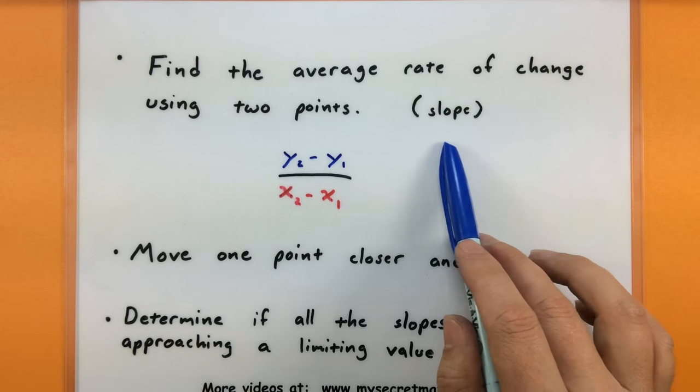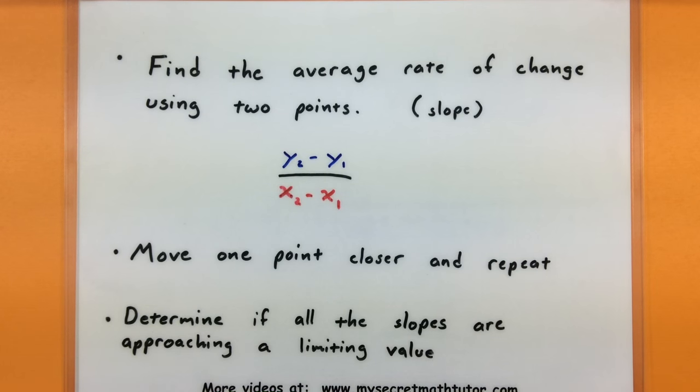Now after we figure out that slope, we'll record it, and then we'll actually take one of those points and move it closer to our given point. And then we'll just repeat that process over again. So again we'll figure out the slope between this new point and figure out what that average rate of change is. And like before, we'll write it down so that we can compare the two.